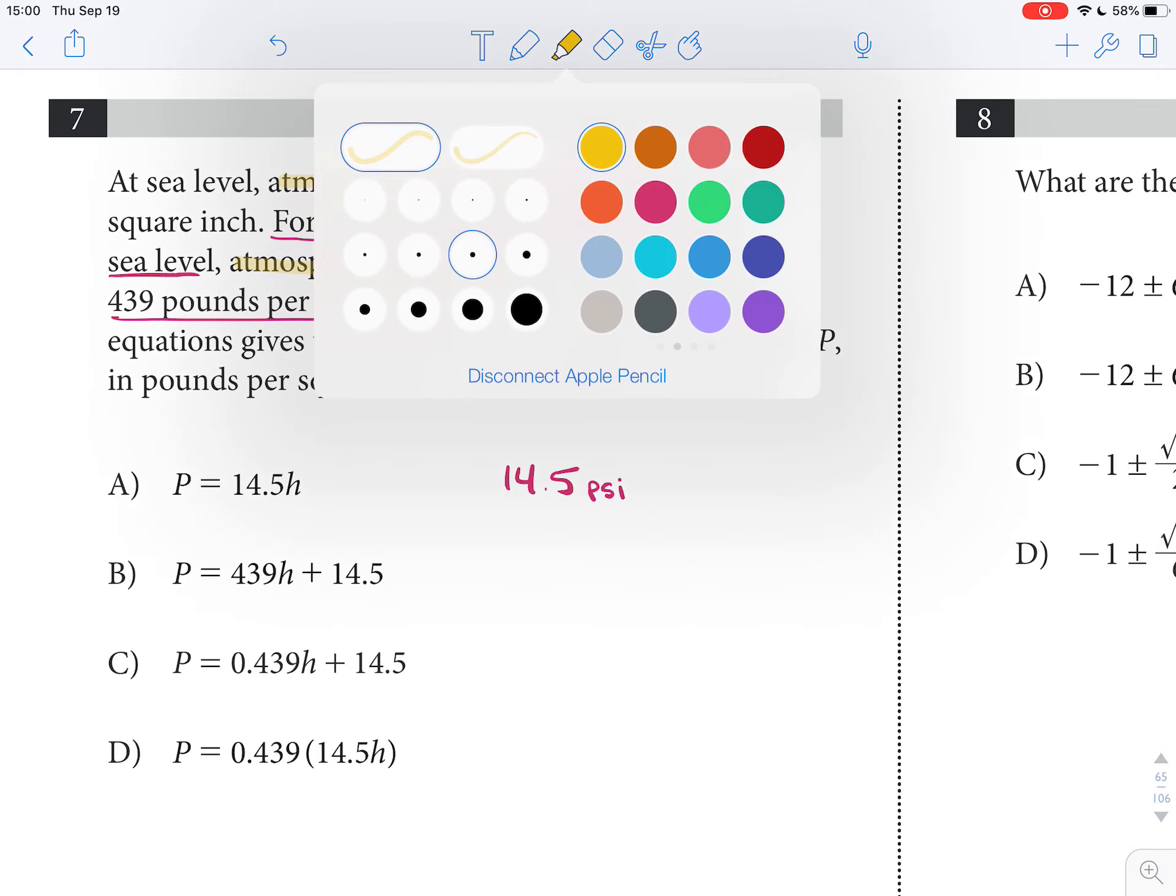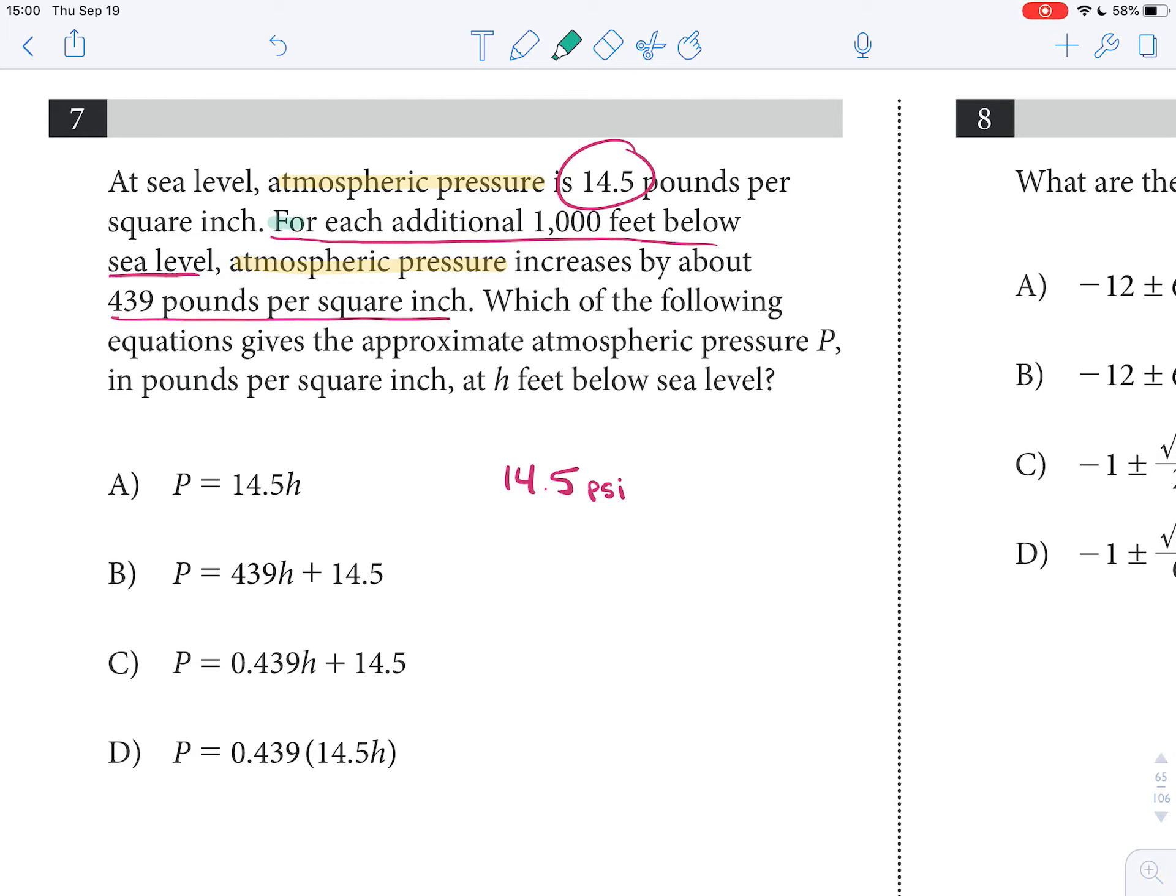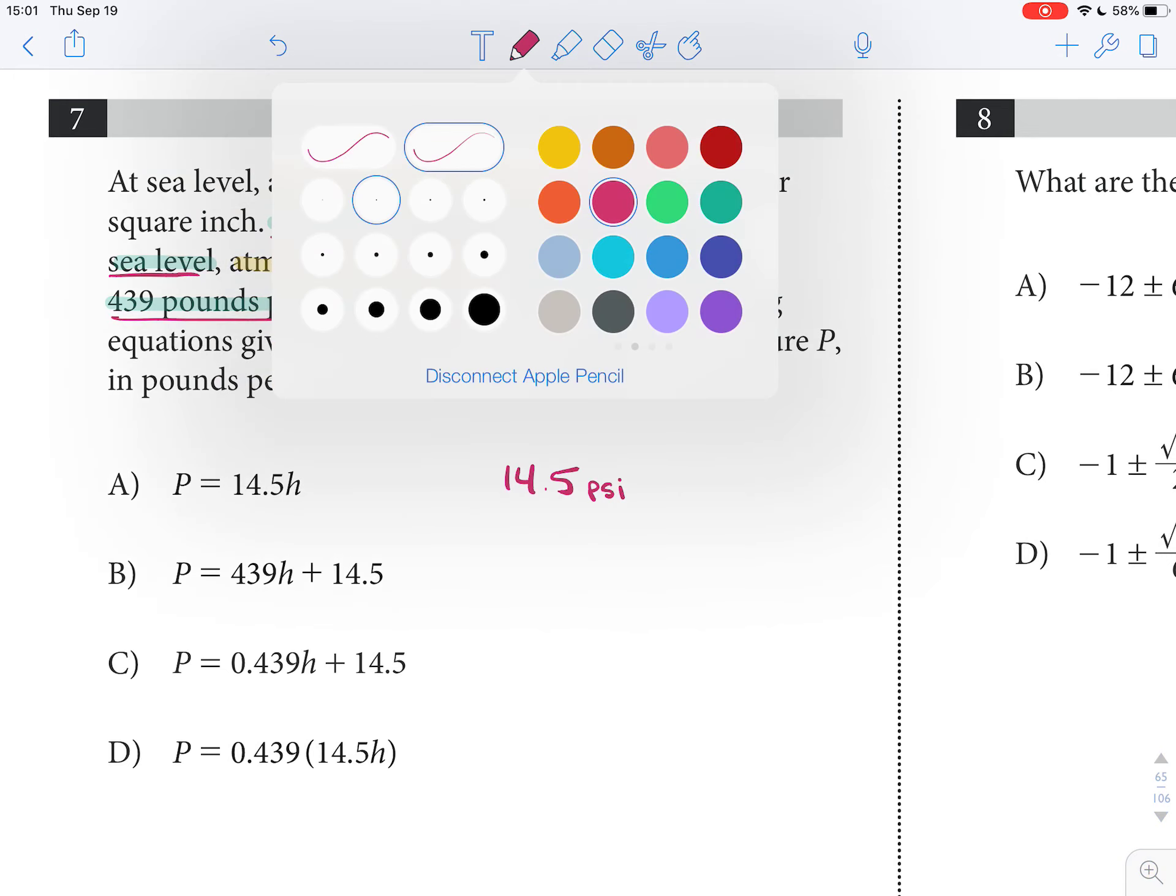So, we need to be able to translate this statement, where it's for each additional 1,000 feet below sea level, the atmospheric pressure increases by about 439 pounds per square inch.